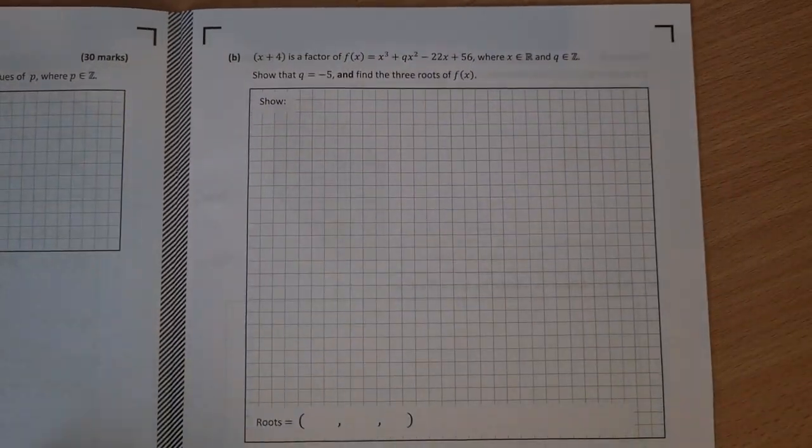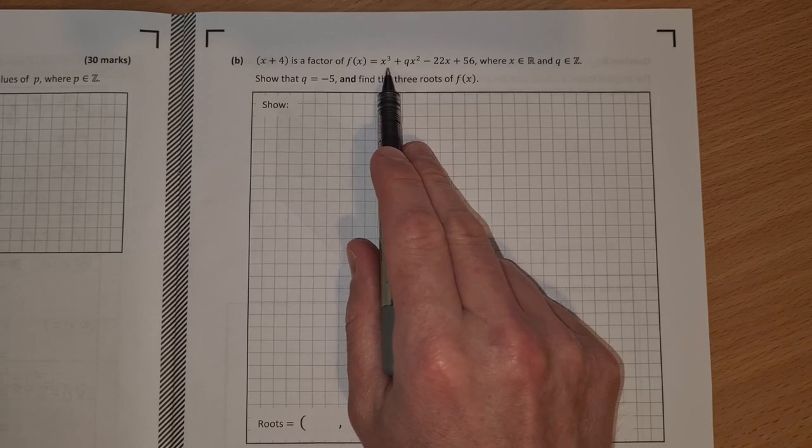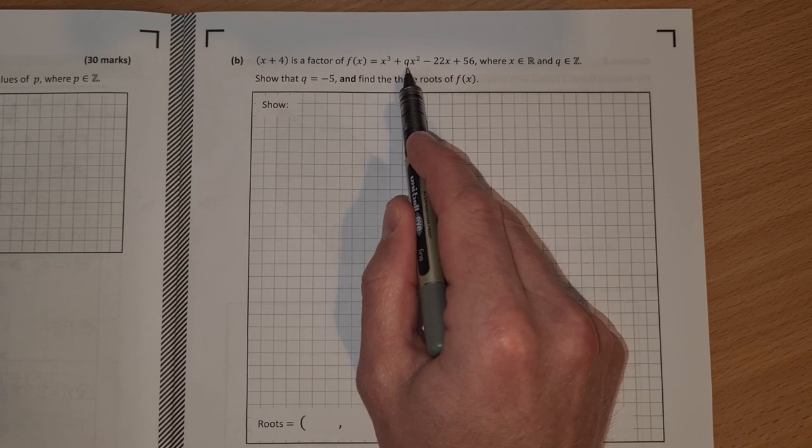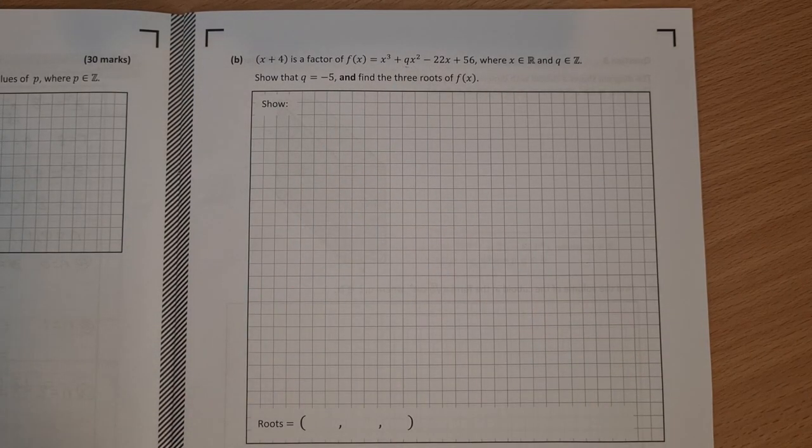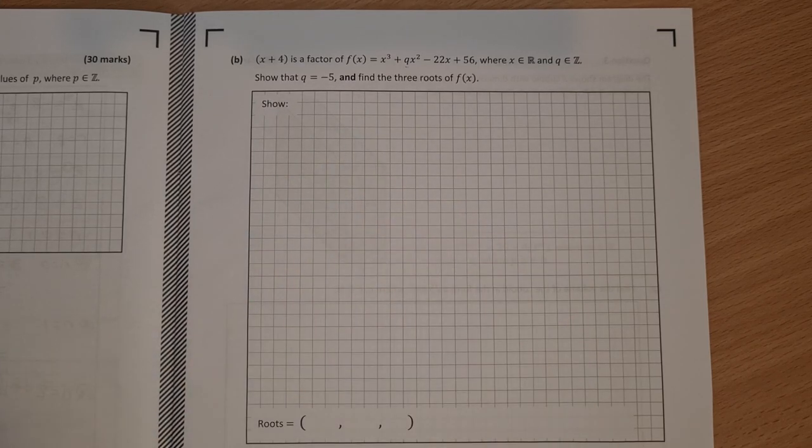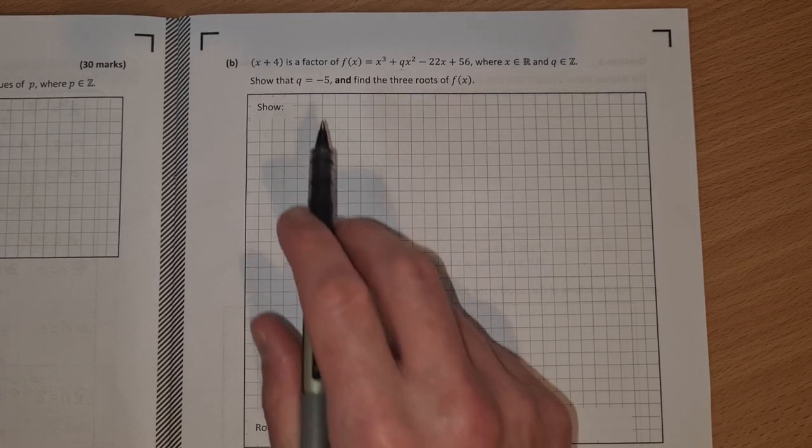And likewise with part b, x plus 4 is a factor of this equation here, cubic function here. We've got a q there as a coefficient of the x squared.